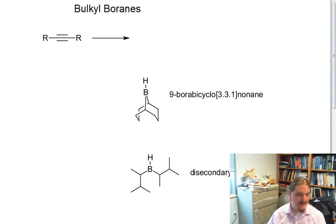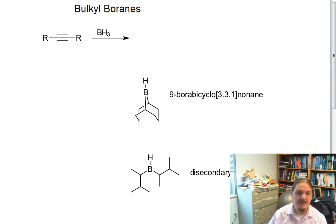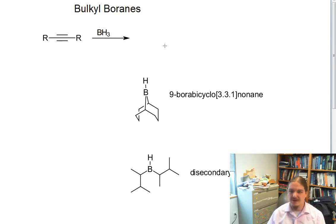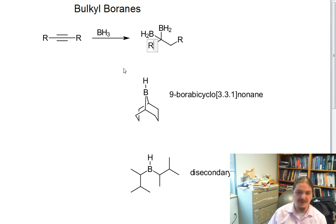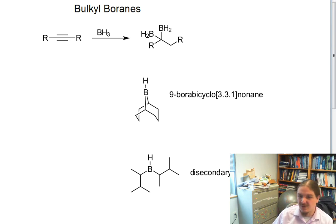And that's not necessarily what we want. The smallness of borine is also going to have trouble when it comes to talking about regioselectivity — we'll get to that here in a moment. But basically, it's possible for borine to end up on the alkyne twice, and this is not necessarily what we want.